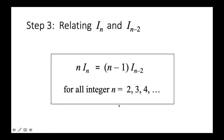From this recurrence we immediately obtain the ratio I(n)/I(n−2) = (n−1)/n.